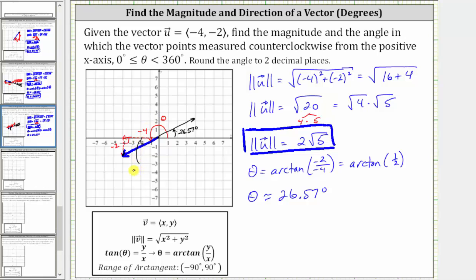which means our angle theta is actually 180 degrees plus 26.57 degrees, which equals 206.57 degrees.